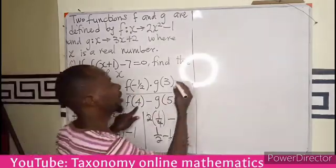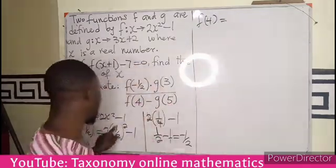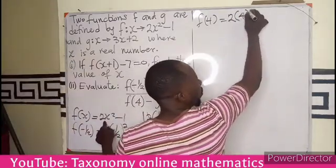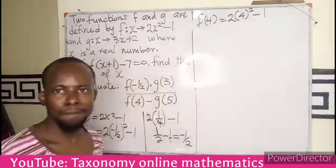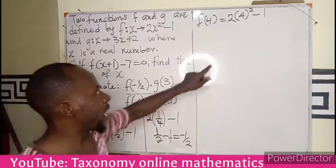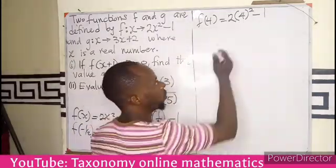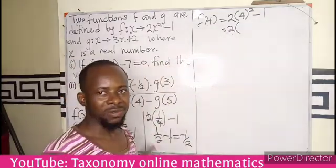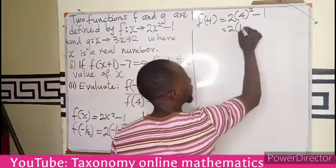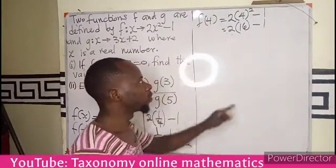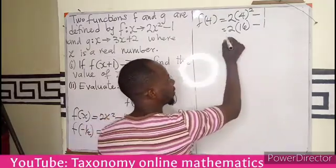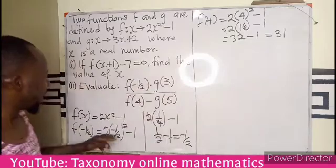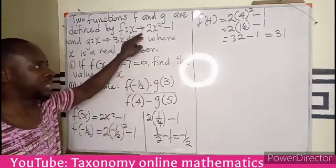Now let's go for f of 4. In the same relation, it becomes 2 times 4 squared minus 1. Where I see x, I put 4. So it becomes 2 times 16 — that is 4 times 4, not 4 times 2 — so 2 times 16 minus 1 gives us 32 minus 1, which gives us 31. The image of 4 under this relation is 31.